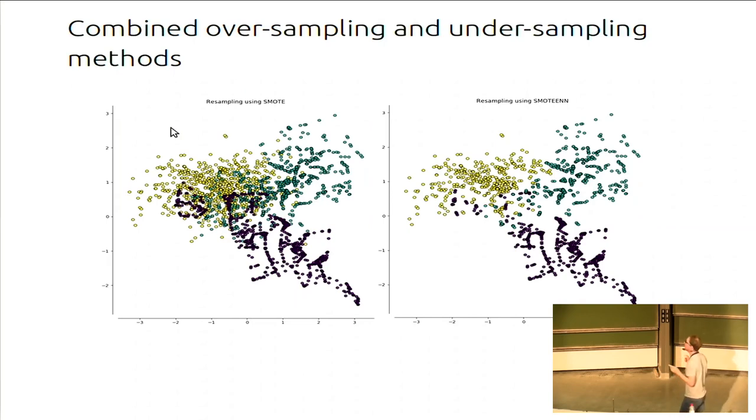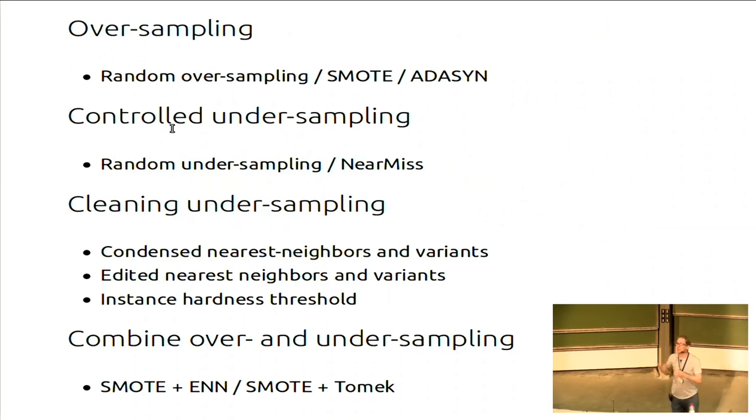You can also combine oversampling and undersampling. So you can use SMOTE, for instance, which is an oversampling method on the left, which will create noisy points in the distributions. And you can use a cleaning method afterwards, just to clean the borders. So that's a summary of all what we are implementing right now in the toolbox. We have several methods for oversampling, and SMOTE, which are really well known. And then we have near-miss and some cleaning methods, like condensed nearest neighbors and several variants, and edited nearest neighbors also, and some variants. And then we have things that combine oversampling and undersampling.